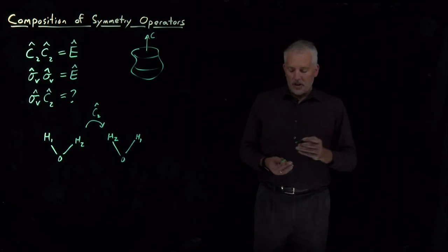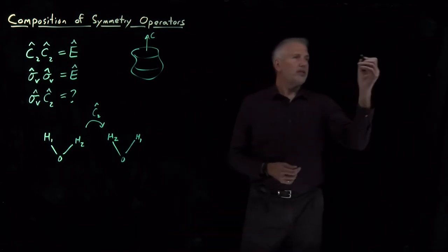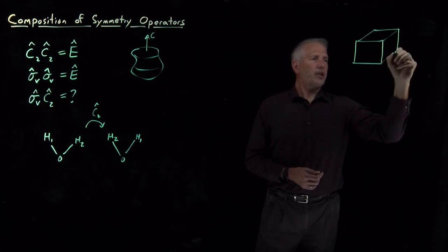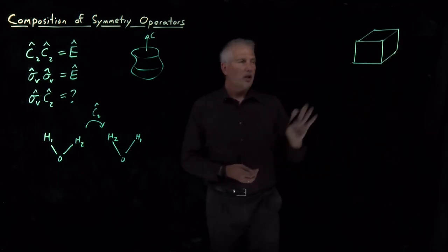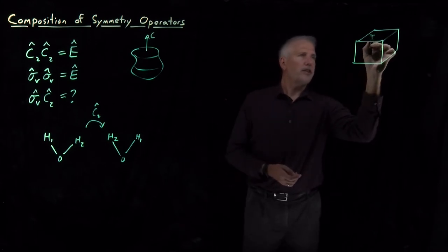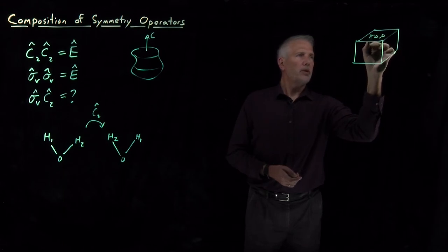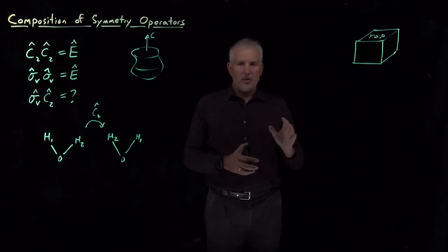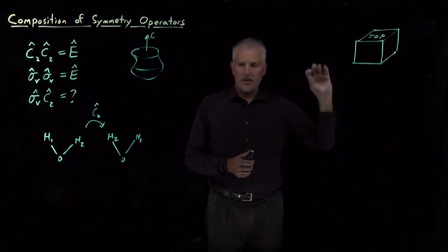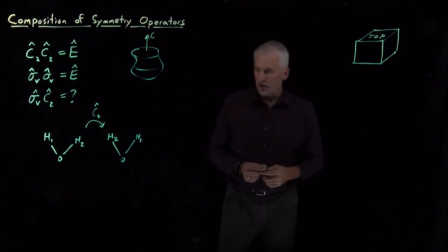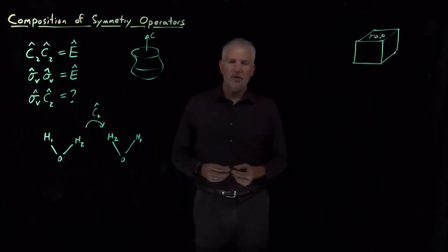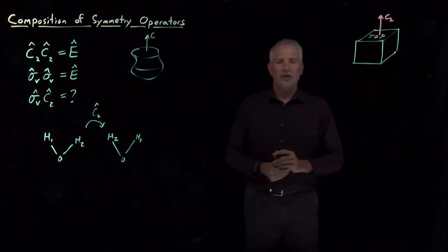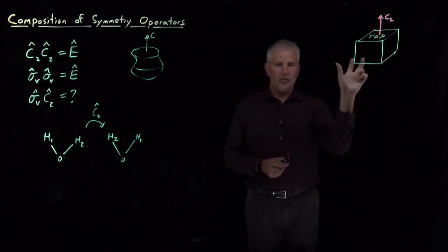One approach is to sketch a cube — a relatively easy three-dimensional object to draw, though a cube itself is quite symmetric. To break that symmetry, we label the top face of the cube with the letters T-O-P. Now we have an asymmetric object: when we rotate or reflect it, the letters rotate or reflect too, so we can see the change that's happened to the cube. We define a C2 axis through the middle pointing out the top and bottom, about which we can rotate by 180 degrees.